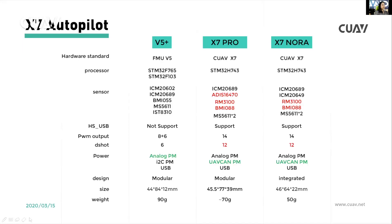The X7 series has much higher performance. For the sensors, we use the ADIS16470, which offers higher performance and more stable operation. We also add the industrial compass RM3100, which provides better anti-interference capability. We also include the BMI0AA sensor to maintain stable operation at low temperatures.